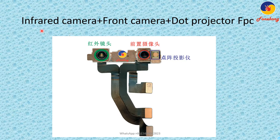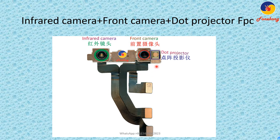Now let's talk about the infrared camera, front camera, and dot projector FPC — three-in-one FPC. This one is the infrared camera, this one is the front camera, this one is the dot projector. This is the flex cable of the infrared camera, this is the front camera flex cable — three in one.